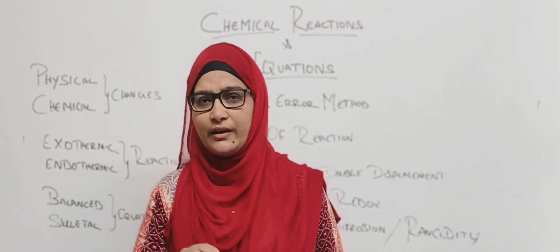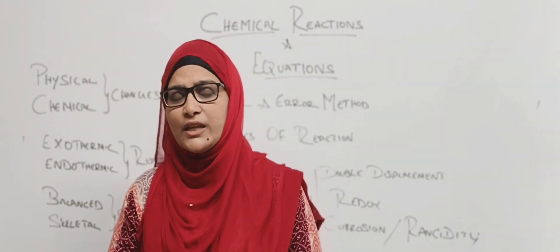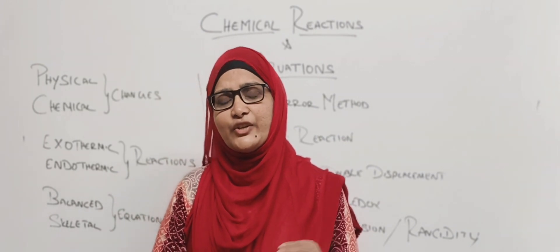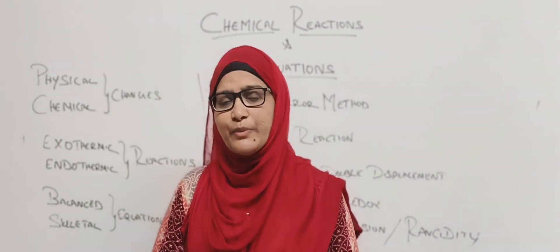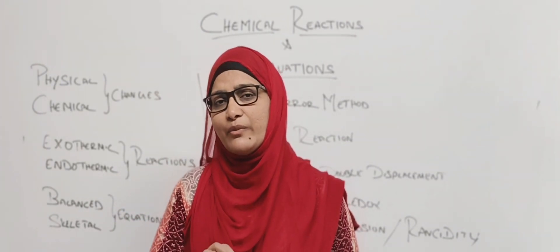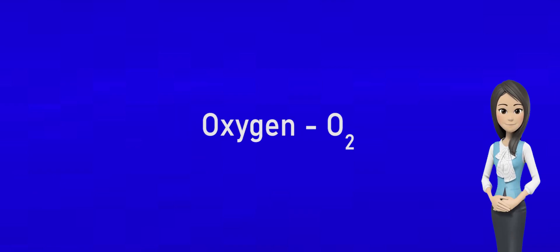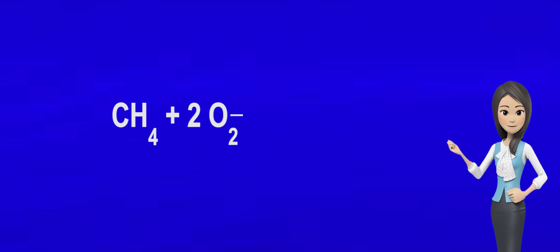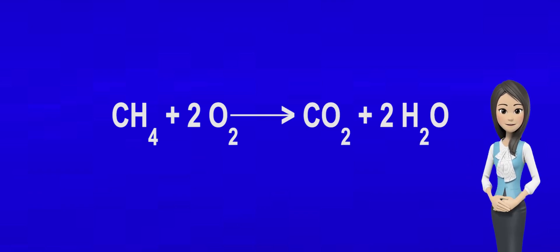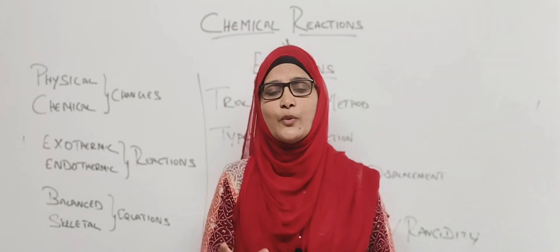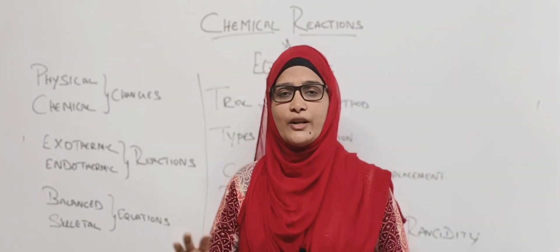For example, methane is CH4 and oxygen is O2. So CH4 plus O2 gives carbon dioxide plus water. In this case, we have mentioned the chemical equation. We can see what the reactants and products are clearly.